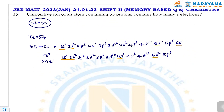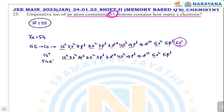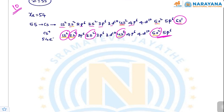The next question: a uni-positive ion of an atom containing 55 protons — how many s electrons does it contain? 55 protons means cesium (Cs). Its electronic configuration is: 1s², 2s², 2p⁶, 3s², 3p⁶, 3d¹⁰, 4s², 4p⁶, 4d¹⁰, 5s², 5p⁶, 6s¹. Removing the outer electron (6s¹) gives Cs⁺. Counting s electrons: 1s²(2) + 2s²(2) + 3s²(2) + 4s²(2) + 5s²(2) = 10 s electrons in total.